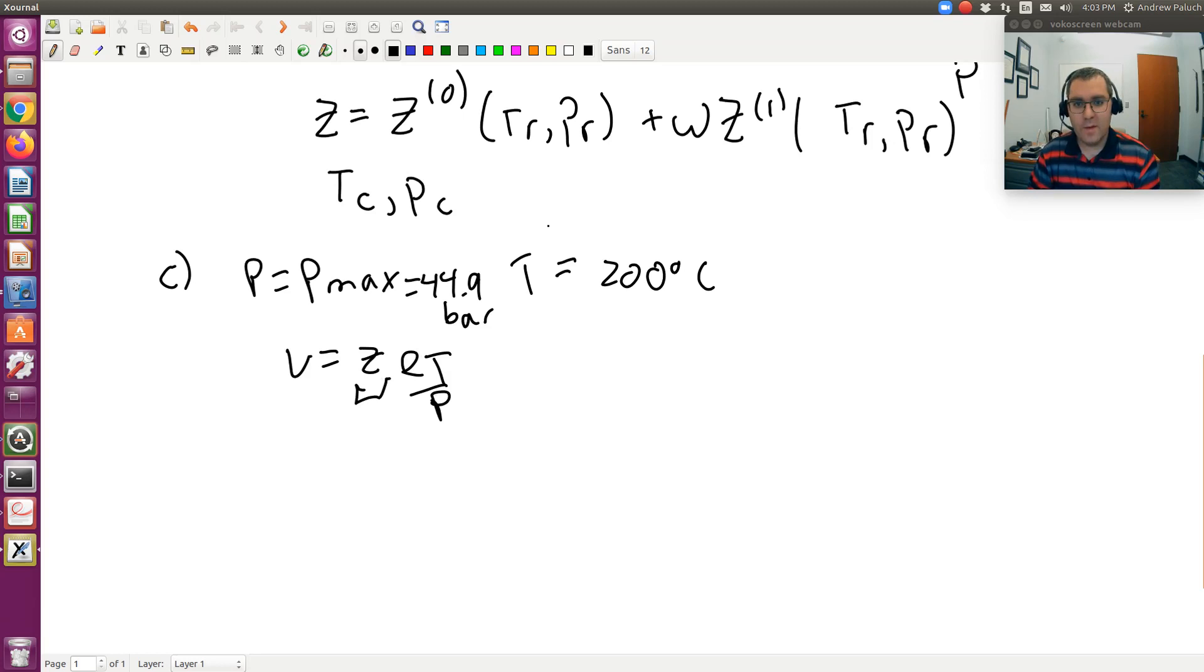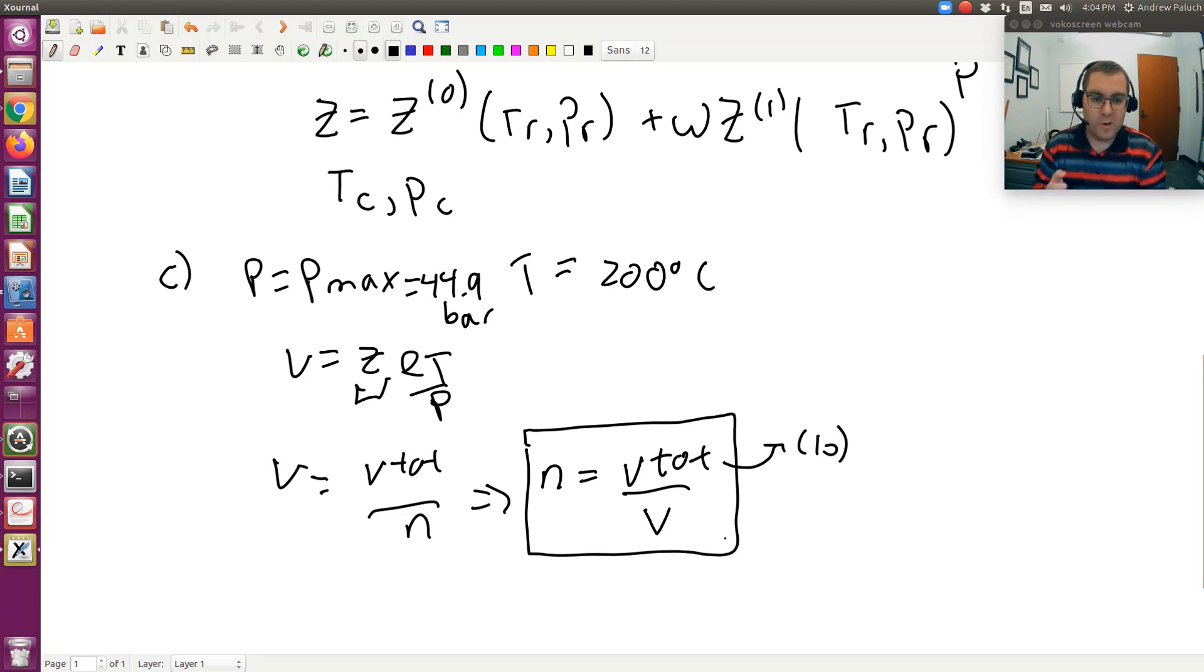We can look up values of Z naught and Z1 under those conditions in the Lee Kessler tables and calculate Z. Once I have V, now I know V total. Remember V is nothing more than V total over N. So if we know V total and we know little V, N is going to be V total divided by V. I get V total, this is from part B, you calculate V with this temperature and that maximum pressure, and you can use that to solve for N.